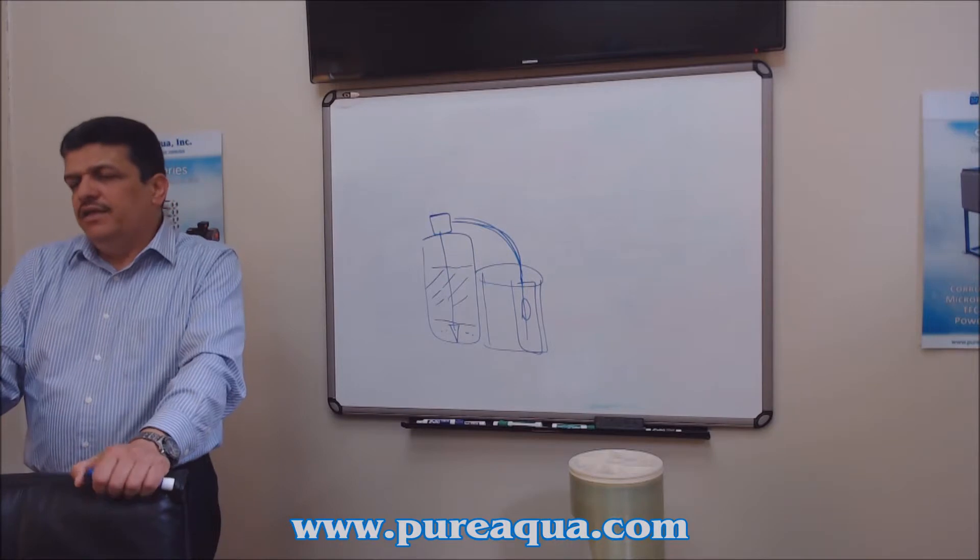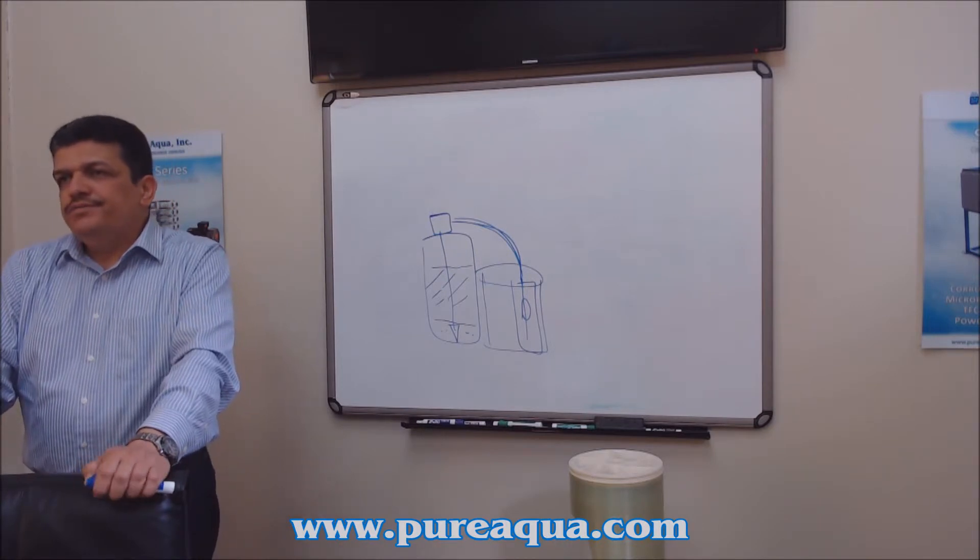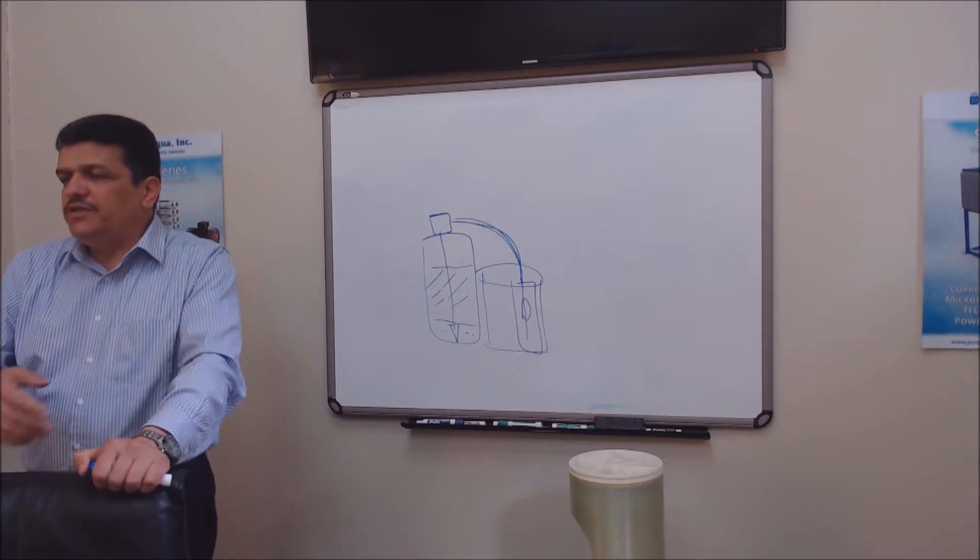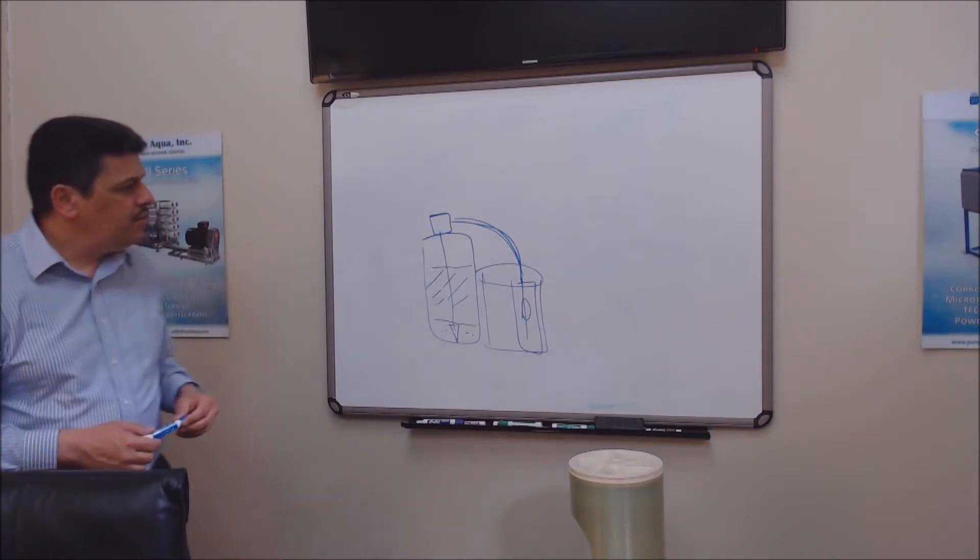Most of the houses here with a softener would give you about 2,000 gallons between the regenerations.